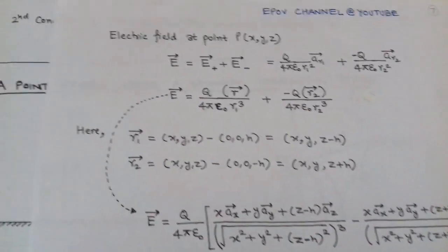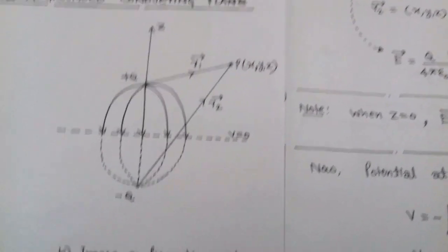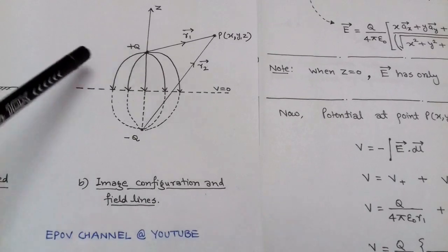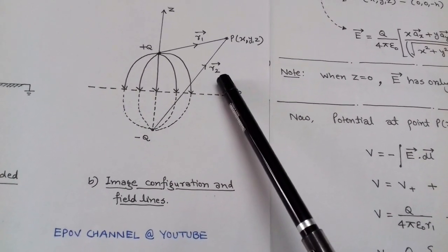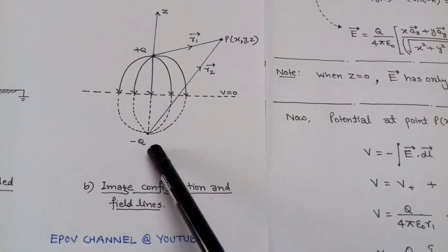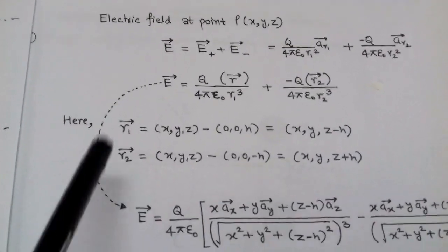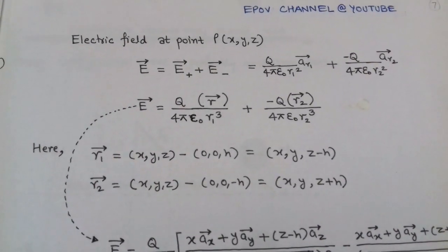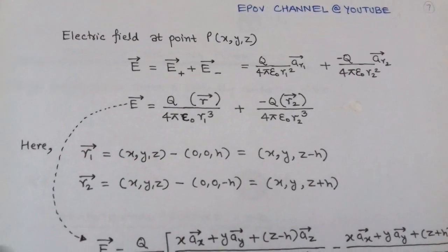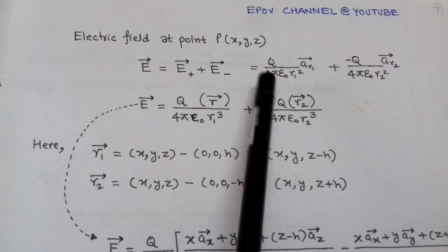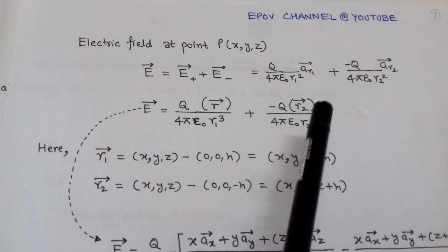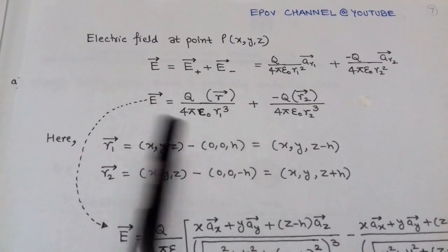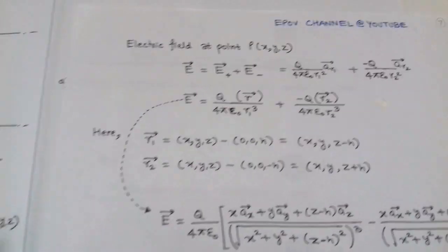To determine the electric field at point P, we note that point P has distance vector r1 with respect to positive charge q and distance vector r2 with respect to image charge −q. The total electric field at point P is the sum of the electric field due to the positive charge and the electric field due to the image charge −q, using E = q / (4π ε₀ r²) r̂. The unit vector r̂ = r⃗ / |r⃗|, giving the electric field in terms of distance vectors.